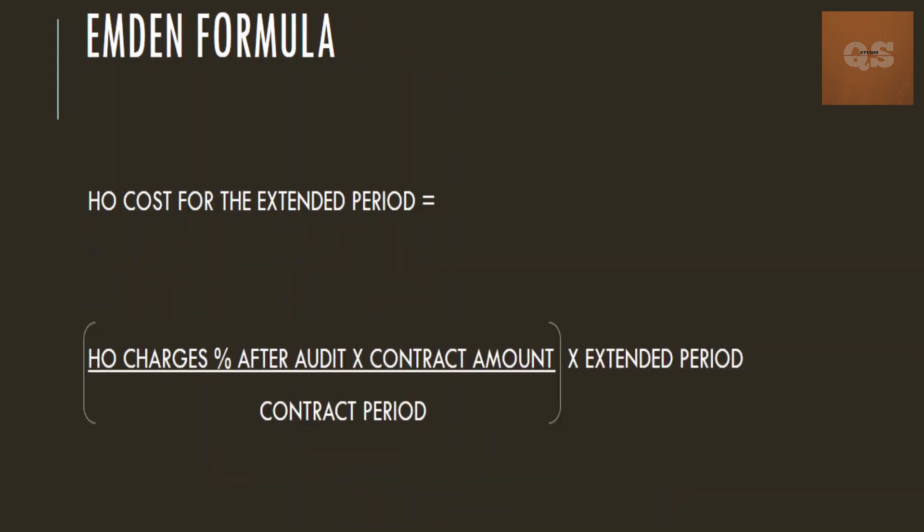That is the head office charges you have the right to claim for the extended period of 120 days using the Hudson formula. Next is the Emden formula. This formula can be used when the percentage of head office charges has not been mentioned anywhere in the contract, or if the client needs to know the exact head office amount incurred for this particular project. It can also be used if a dedicated team is working in your head office for this project, or when your company is exclusively working on this project and it is easy to identify the head office expenses. An audit will be done and the client may check all the invoices, bills, expenses, and proofs of all costs incurred in the head office for this specific project.